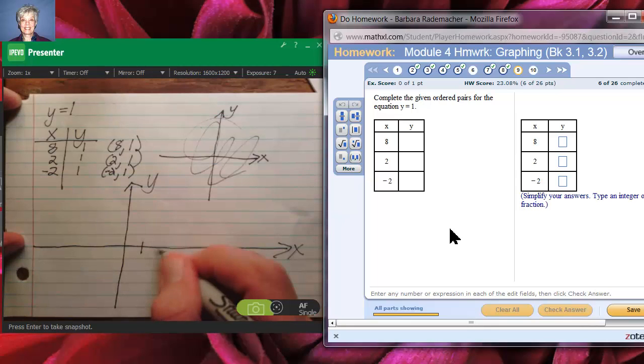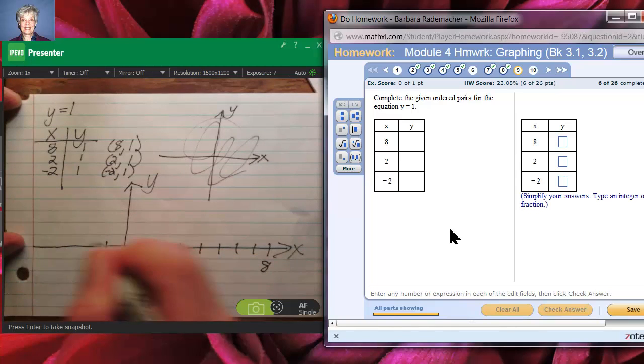So, let's see. Now, that'll do it. 1, 2, 3, 4, 5, 6, 7, 8. Here's 8. Here's 2. And, here is negative 2.